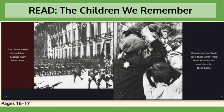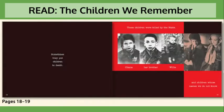The Nazis hated the children because they were Jews. Sometimes the Nazis took them away from their families and sent them far from home. Sometimes they put children to death. These children were killed by the Nazis — Shaunah, her brother, Lily, and children whose names we do not know.